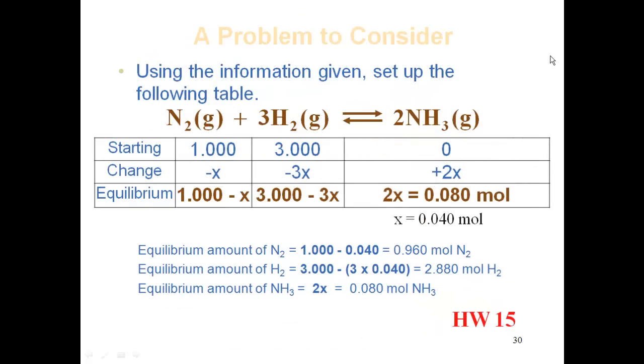So in essence, in this problem my final answers: we know that the amount of nitrogen will be 1 - x, which means that I have 0.960 moles of nitrogen because I plugged in that 0.04 for x.